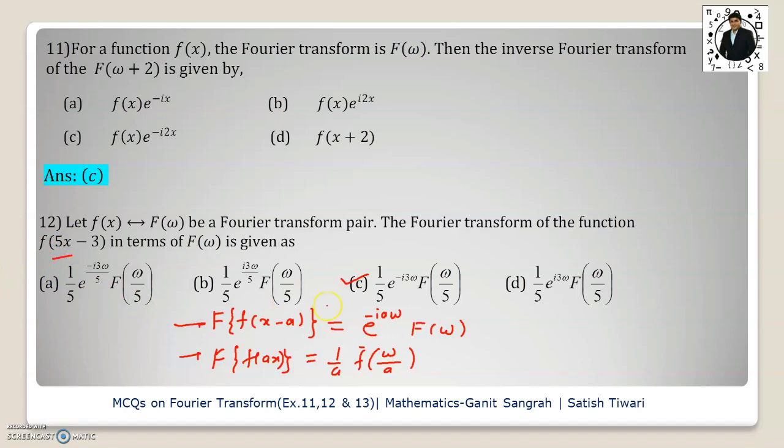Because for 5x, we are writing 1 by a f of omega by 5. And for this minus 3, I am writing here e to the power i3 omega. So, option c is the correct option.